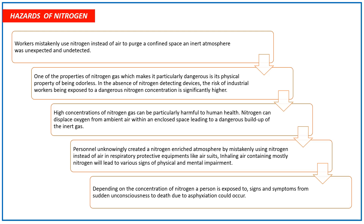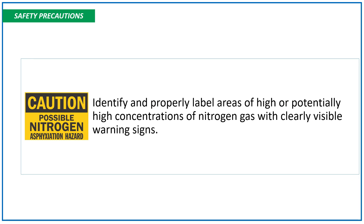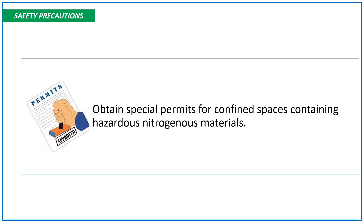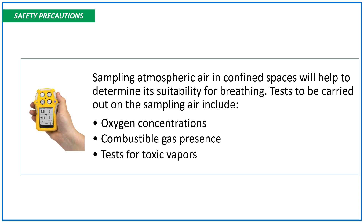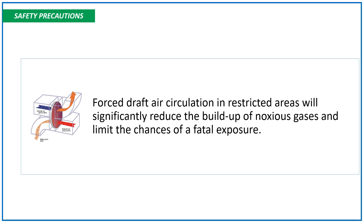Depending on the concentration of nitrogen a person is exposed to, signs and symptoms ranging from sudden unconsciousness to death due to asphyxiation can occur. Safety precautions to be taken while handling or using nitrogen: identify and properly label all areas of high or potentially high concentrations of nitrogen gas with clearly visible warning signs. Obtain special permits for confined spaces containing hazardous nitrogenous materials. Sampling atmospheric air in confined spaces will help determine its suitability for breathing; tests on sampled air should include oxygen concentrations, combustible gas presence, and a test for toxic vapors. Force draft air circulation in restricted areas will significantly reduce the buildup of noxious gases and limit the chance of fatal exposure.